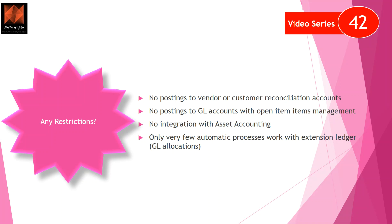The restrictions are: no posting to vendor or customer reconciliation accounts, no posting to GL accounts with open item management, no integration with asset accounting, and only very few automatic processes work with the extension ledger — GL allocation being one. All postings you make on the standard ledger automatically go to the extension ledger, but if you select the extension ledger for posting, you can only do adjustment postings.